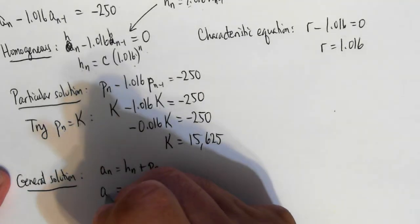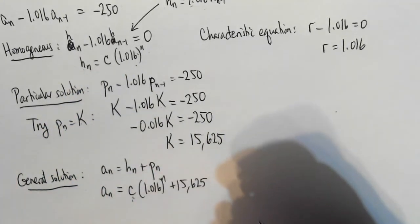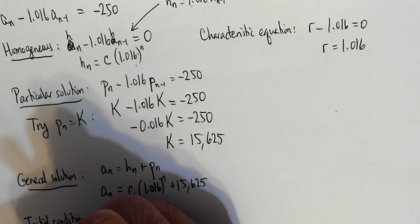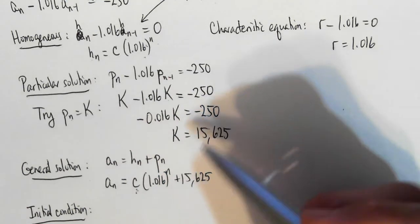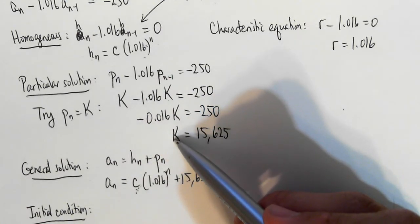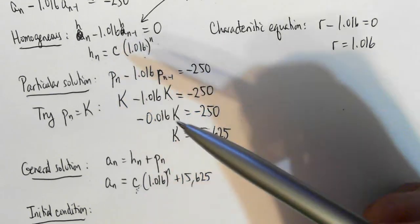So the only thing that's left is figuring out what this constant is. So I will use the initial condition to figure out what this constant is. And it's important to remind you that I only solve for c for this initial condition after I've gotten k. So I don't solve for c up here, when I did the homogeneous case.